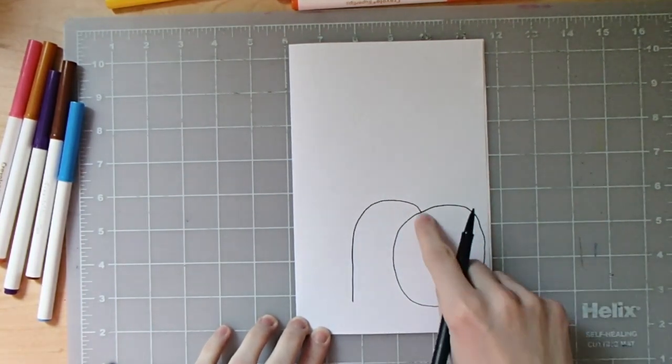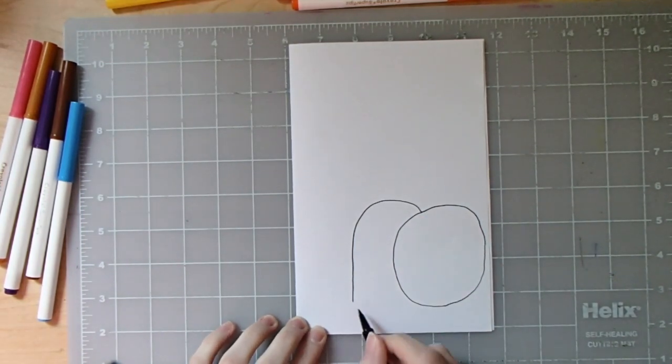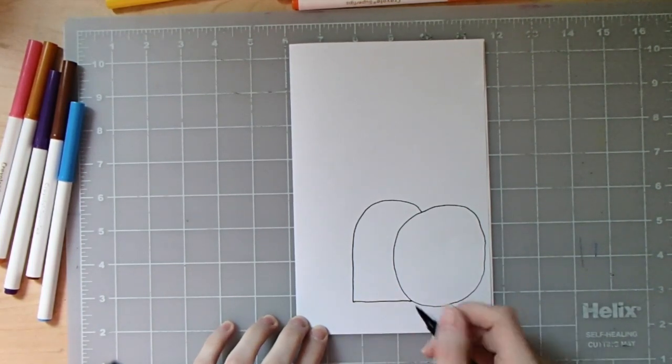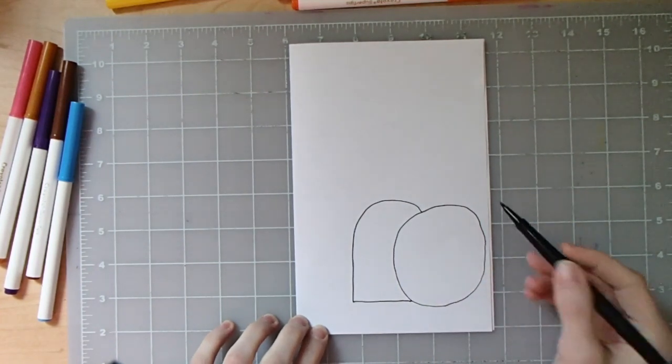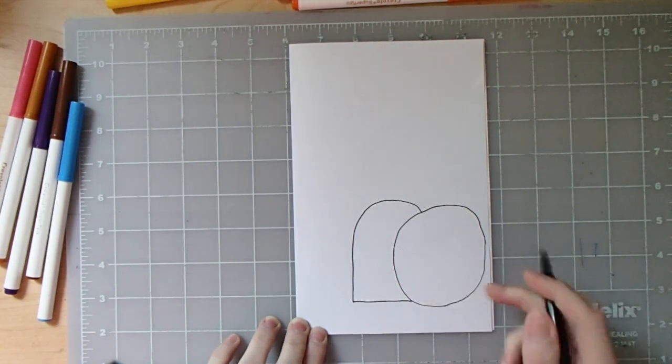So it kind of looks like, if you could imagine, the other part of my letter N over here in this corner. I'm going to connect the letter N to the stone with a straight line. This is going to represent the tomb that the disciples placed Jesus' body in before he rose from the dead.